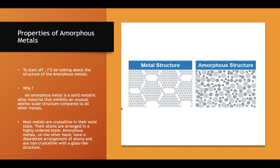In the slides above, I mentioned the amorphous structure. You can see in the picture provided that the regular metal structure is usually highly ordered with a specific arrangement, and the particles are usually the same size. However, in an amorphous structure, the sizes of the particles vary and there is no arrangement. Their atoms are disordered, they have a non-crystalline structure, and it is obviously glass-like.